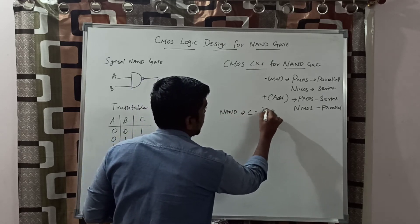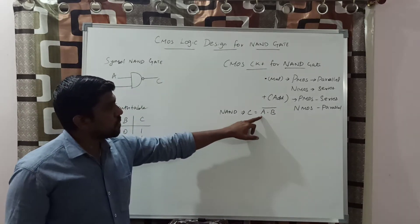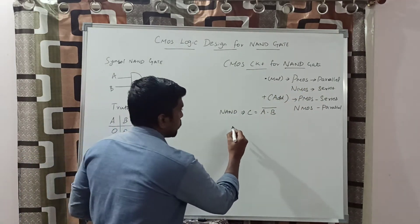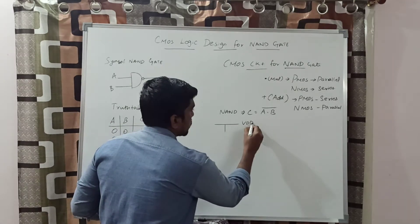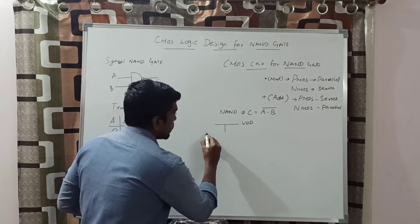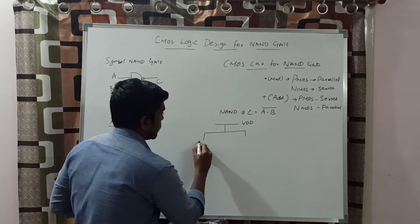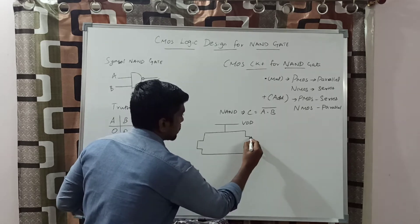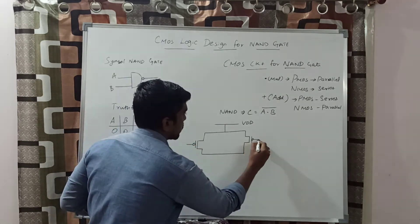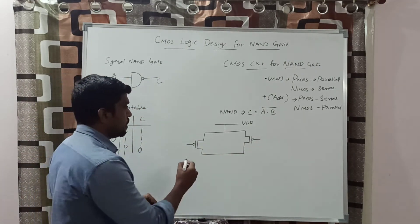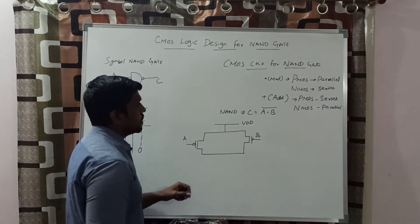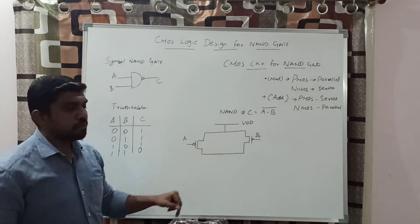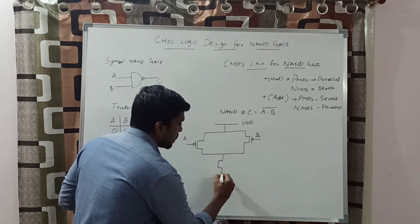The NAND gate output is C equal to A dot B bar (NAND). Applying the multiplication function rule: PMOS transistors connect in parallel, NMOS connect in series. You first apply VDD (plus volt) for designing the pull-up transistors. These two PMOS transistors are connected in parallel, with variables A and B as inputs.